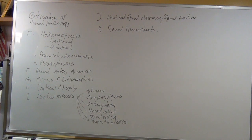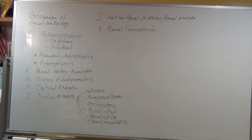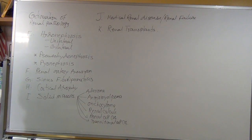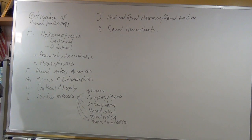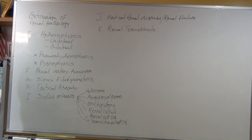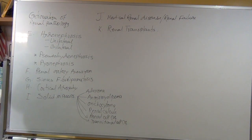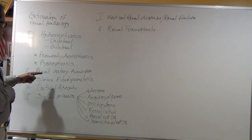Hydronephrosis could be unilateral or bilateral. We will discuss details because a lot of patients present with hydronephrosis. It can be detected while the baby is in the uterus before birth, after birth, and in adults and older people. There is also pseudo-hydronephrosis and pyonephrosis, which we will discuss in detail.